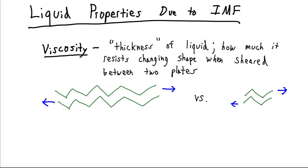Imagine we have this molecule sliding over another molecule. The London dispersion forces and potentially other forces are going to attract these two molecules to each other and cause them to resist being pulled apart.